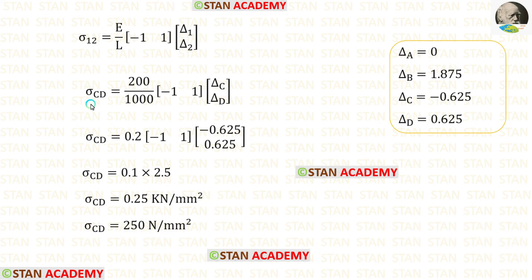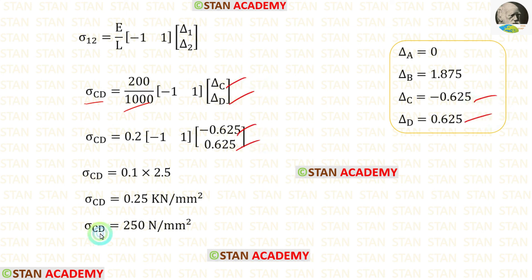Now let us find the stress in CD. The length of CD is 1000 — let us apply that, then apply delta C and delta D. Finally for sigma CD we are getting 250 Newton per millimeter square.